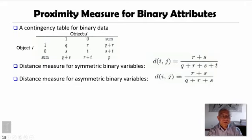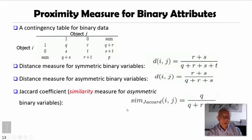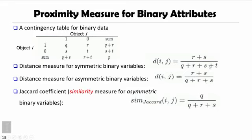The reason is, for example, in medical tests, only the positive one will attract attention. Then for the distance measure, we look at r plus s divided by q plus r plus s, that means all the cases with t cases removed.